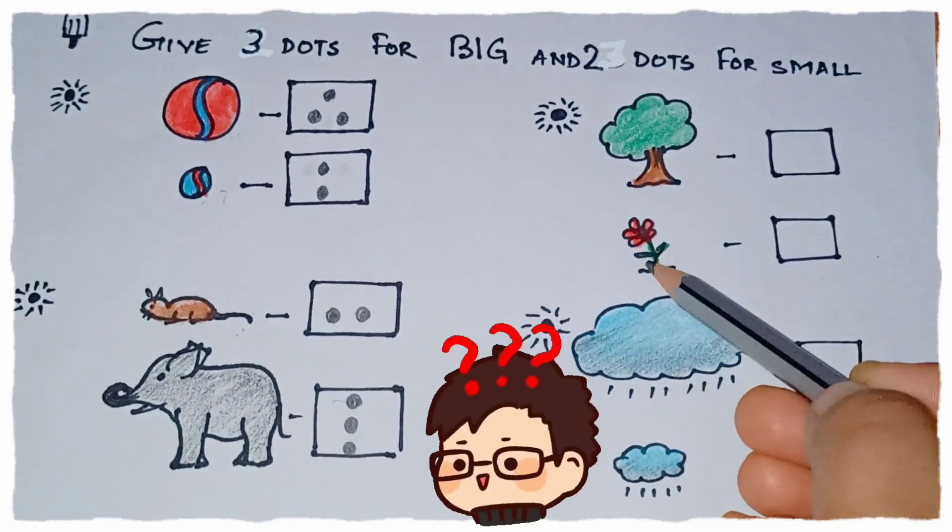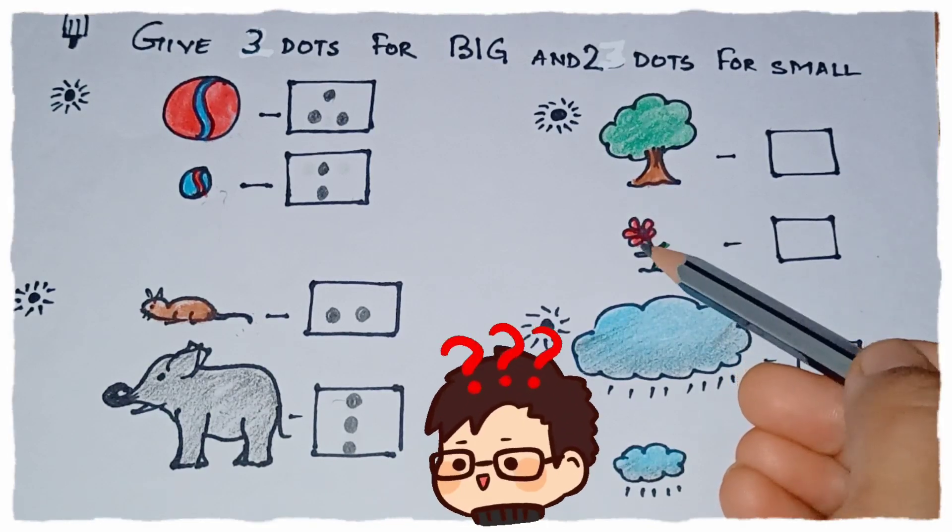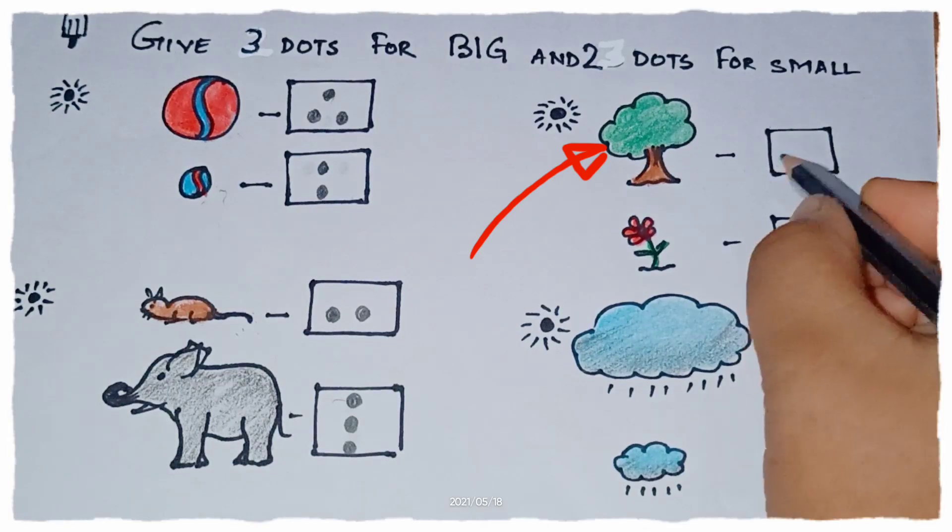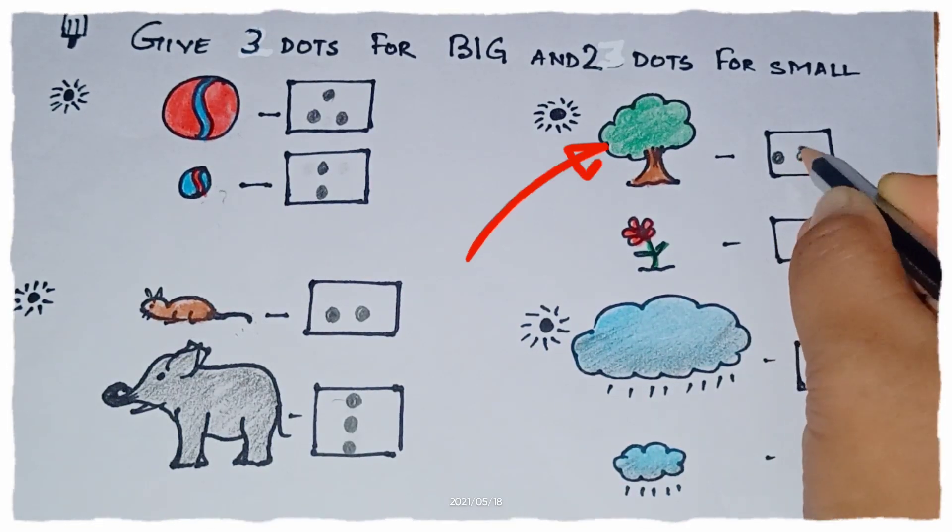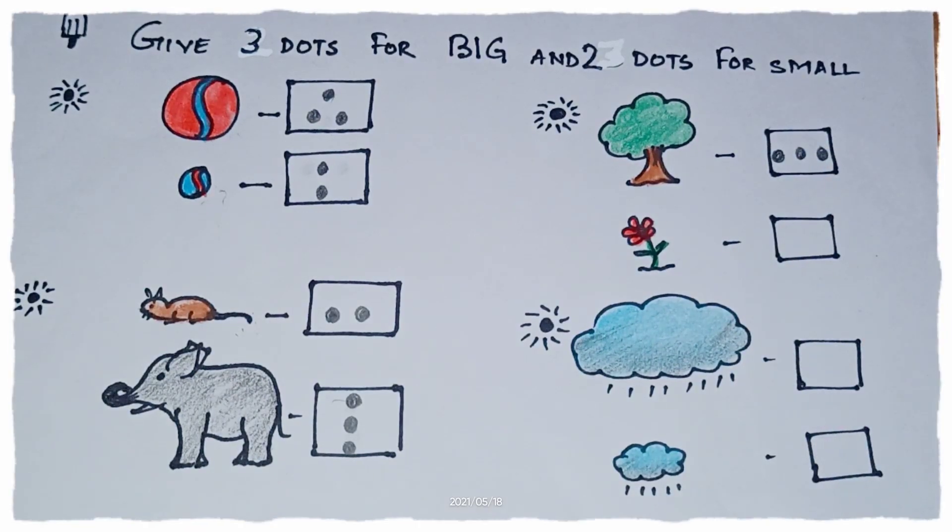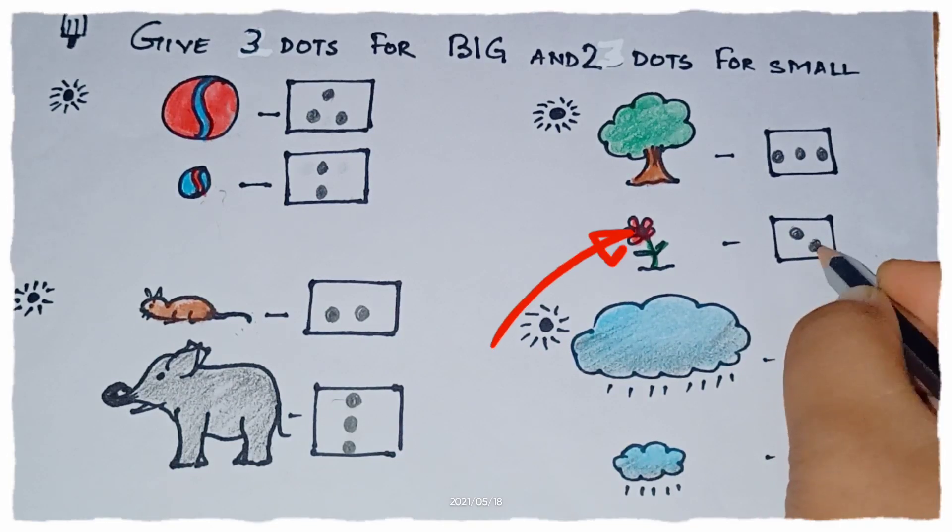Now here we have a tree and a small plant. Which one is big? The big tree. So we are going to give here three dots. Good. And now this small plant, we are going to give here two dots.